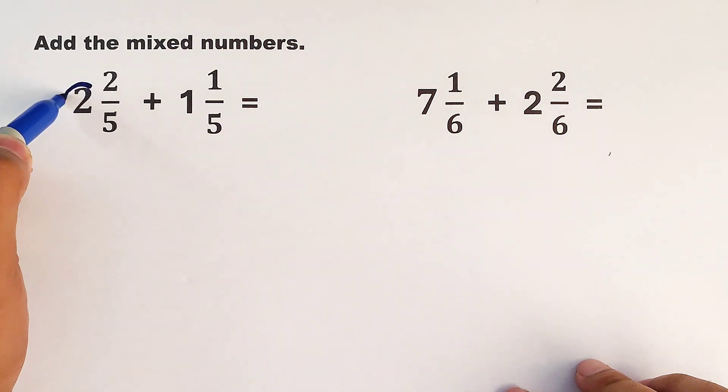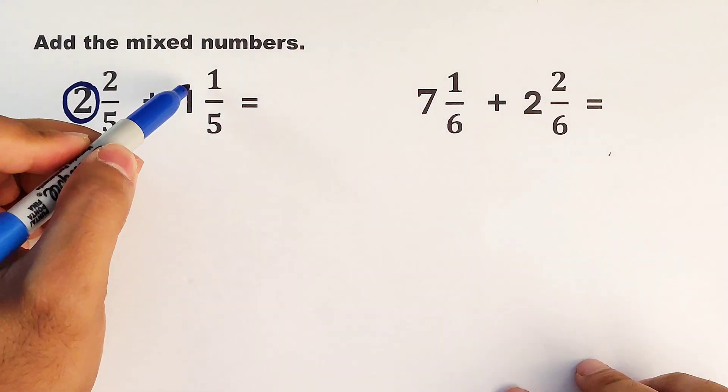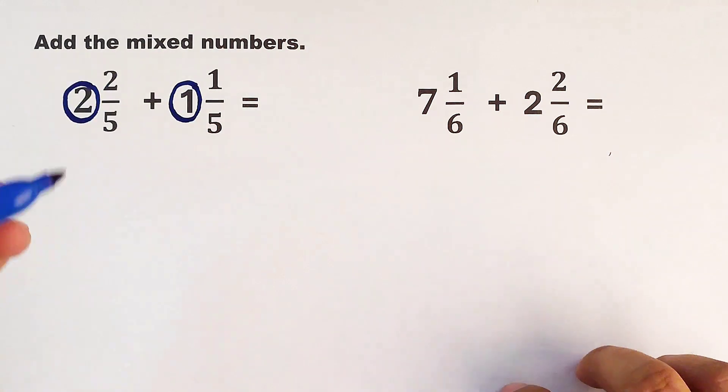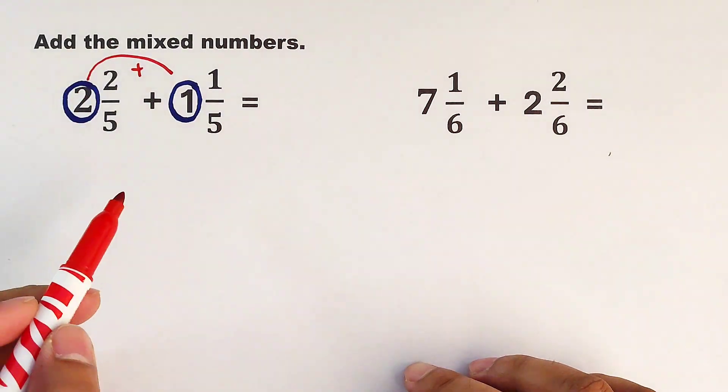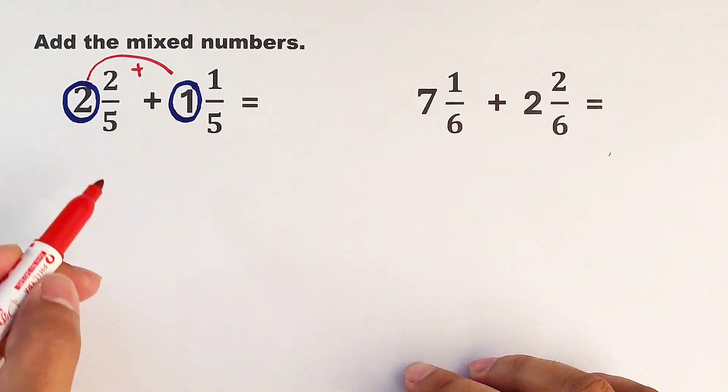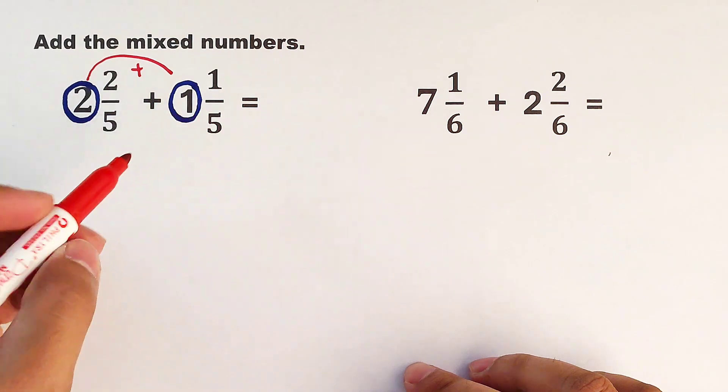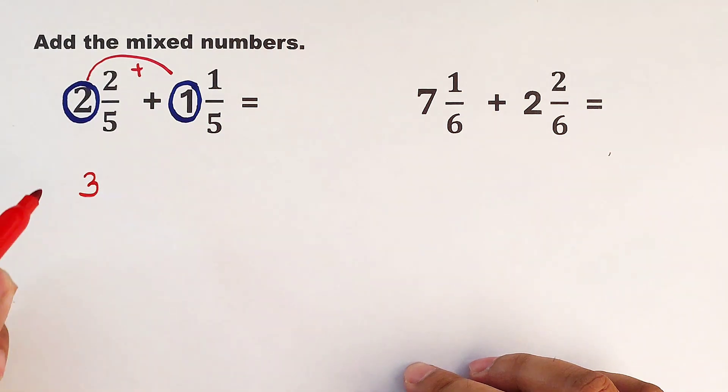For example, I have here 2 and 1 as my whole numbers. What I'm going to do is I will add them separately. Then later on, we will deal with the fractions. We have here 2 plus 1, that would be equal to 3.